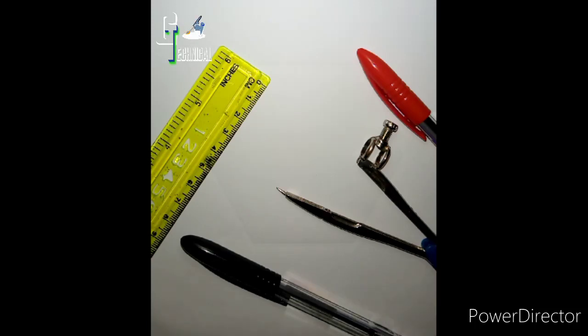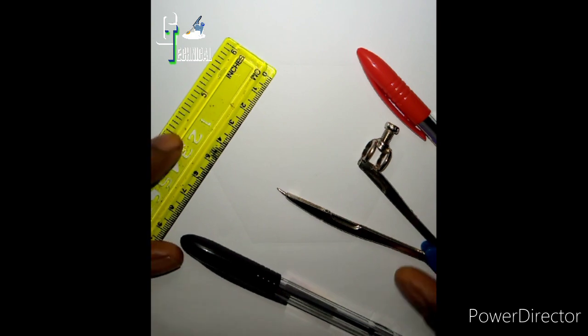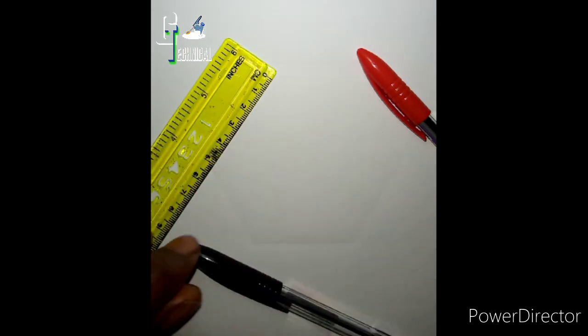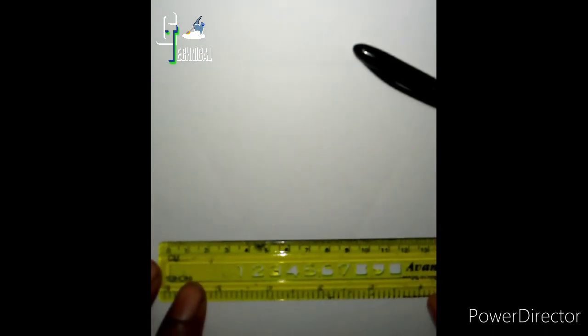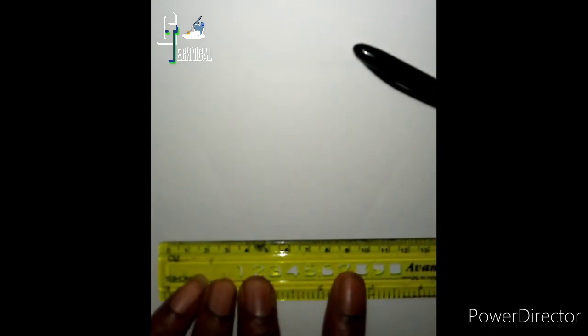Last time we did this using a set square which is a 60 degree set width, but today we are going to use a compass. So now to do that we will first of all draw a horizontal line.